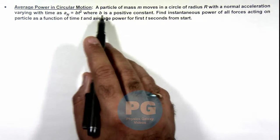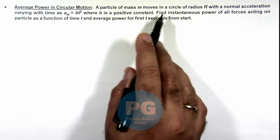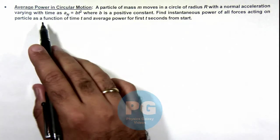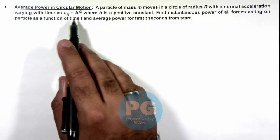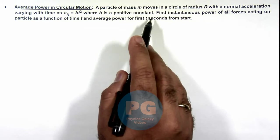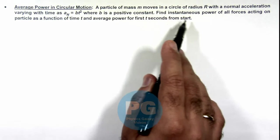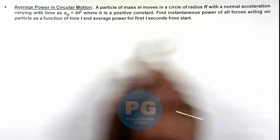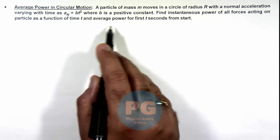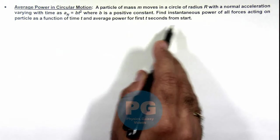We are given that a particle of mass m moves in a circle of radius R, with a normal acceleration varying with time as ay = bt², where b is a positive constant. We are required to find the instantaneous power of all forces acting on particle as a function of time t, and average power for first t seconds from start.